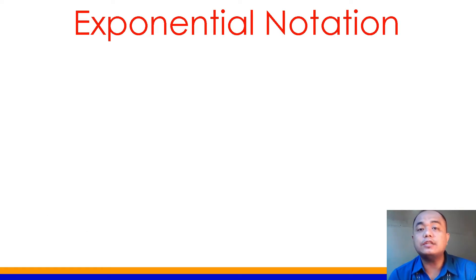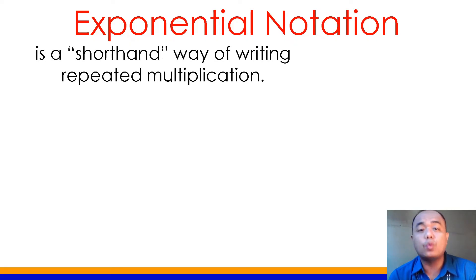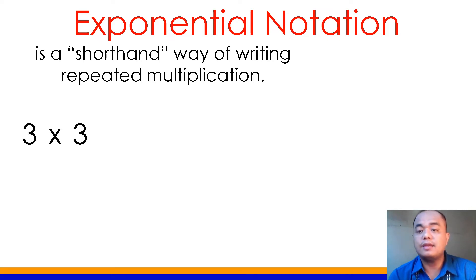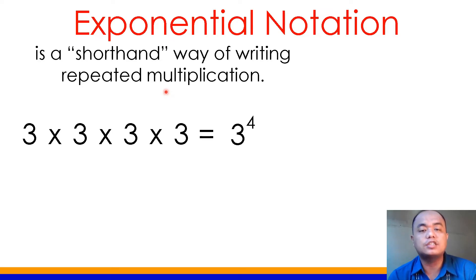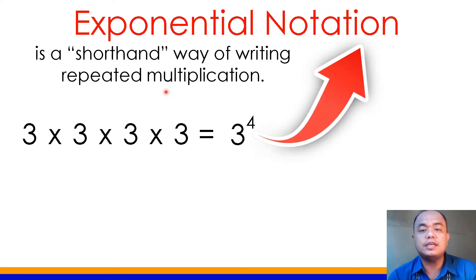What do we mean by exponential notation? Exponential notation is a shorthand way of writing repeated multiplication. For example, we have 3 times 3 times 3 times 3. This is an example of repeated multiplication wherein 3 is being multiplied 4 times. This is also written as exponential notation, as you see here on screen.